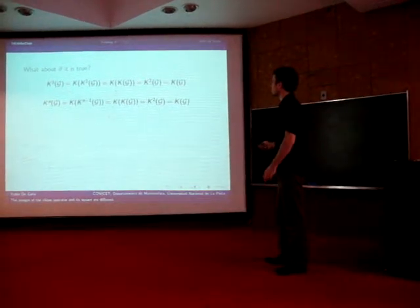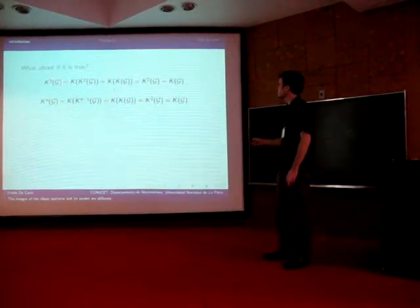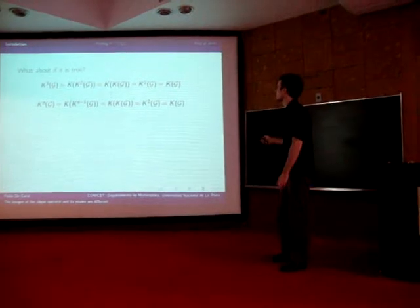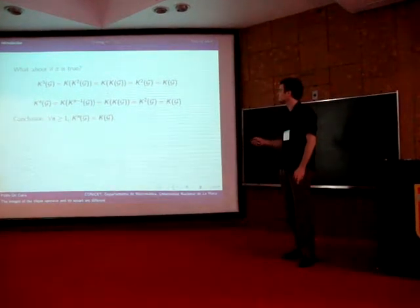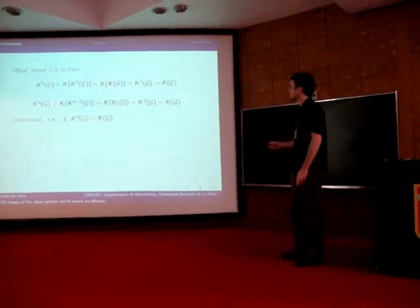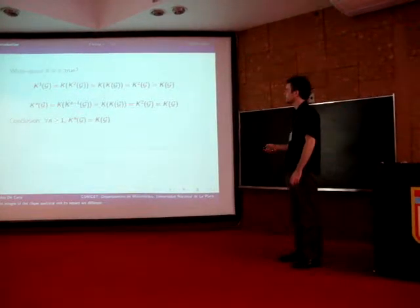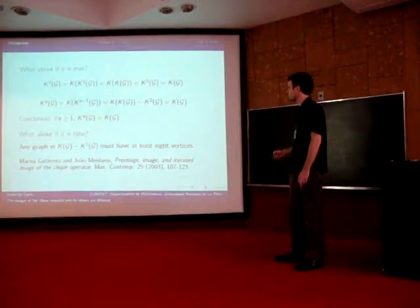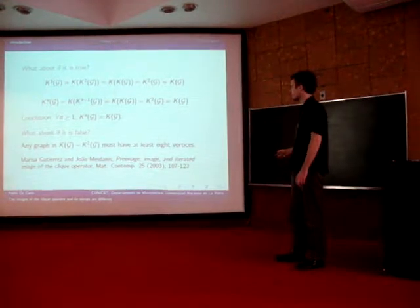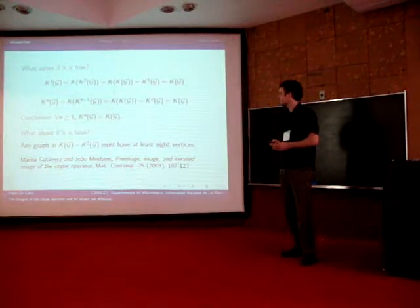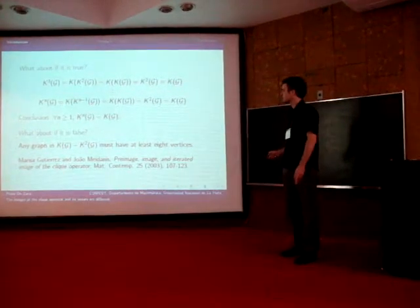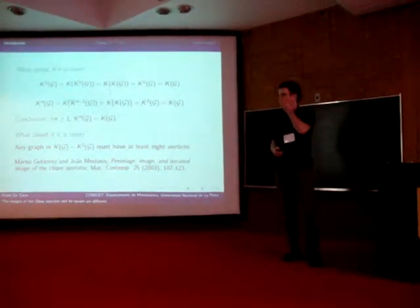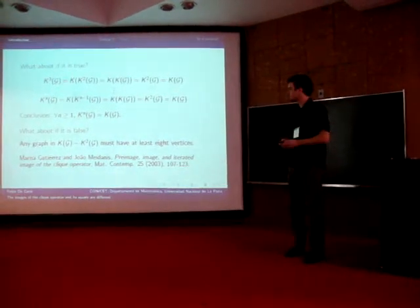Let's think about what happens if it is true. By simple operations one could see that K cubed of G would also equal the class of clique graphs, and then one could use inductive arguments to prove that K to the N of G equals K of G for any N greater than or equal to 1. And what about if it is false? Then we have the following paper by Marisa, my advisor, and Shoal Medanis, which says that any counterexample of a graph in K of G minus K squared of G must have at least eight vertices. This was even the subject adopted at this workshop in 2002 here in Brazil.